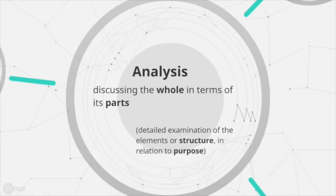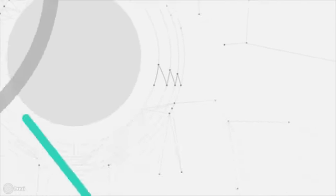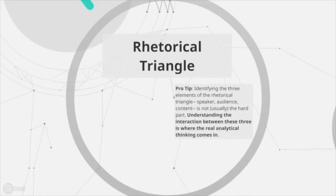So one tool we've used in class is the rhetorical triangle, right? The triangle where we recognize who the speaker is, what the content is, and who the audience is, right? Now, as a pro tip, we can say that identifying the three elements of the rhetorical triangle is not usually the hardest part. But understanding the interaction between these three is where the real analytical thinking comes in, right?